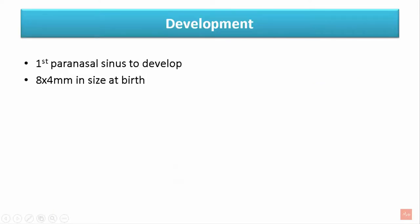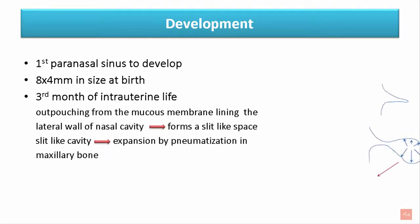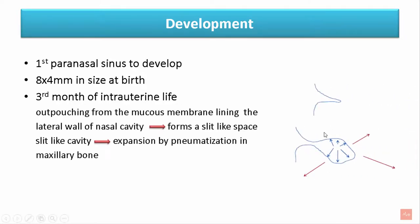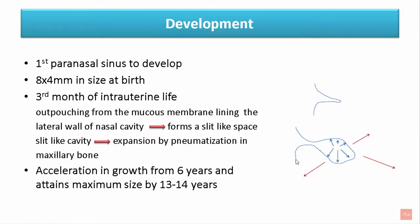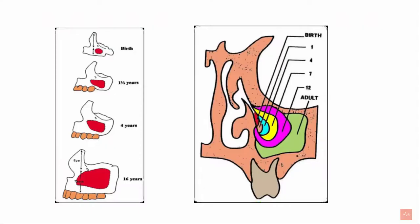The maxillary sinus is the first paranasal sinus to develop. At birth, it has a size of about 8 × 4 mm. Development starts around the third month of intrauterine life by outpouching from the mucous membrane lining the lateral wall of the nasal cavity, forming a slit-like cavity, followed by primary and secondary pneumatization of the maxillary bone. Acceleration in growth is seen around 6 years of age, attaining maximum height by 13–14 years of age, and full size by 16 years.